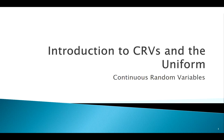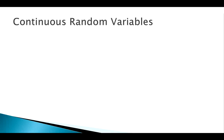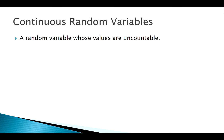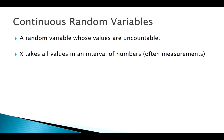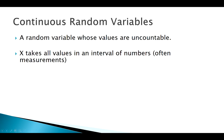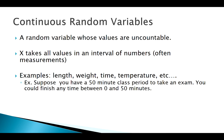Welcome back. Now we're going to move into talking about continuous random variables. We know what discrete random variables are, so we're going to be comparing discrete to continuous. The big distinction between discrete versus continuous is countability — if I can count it, it's discrete; if it's uncountable, it's going to be continuous. Usually these are things like measurements: length, weight, time.